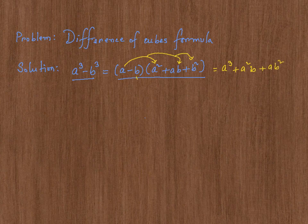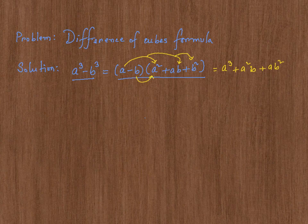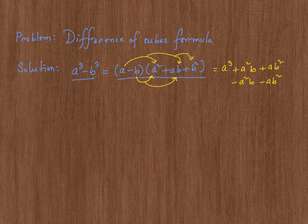Now, similarly, do the same thing. Negative b times a square is negative a square b. Then negative b times ab is negative ab square. Then negative b times b square is negative b cube.